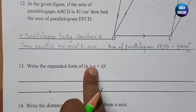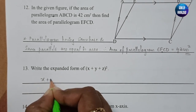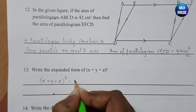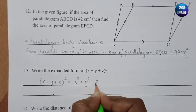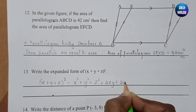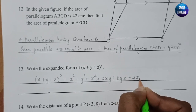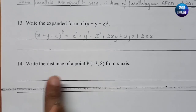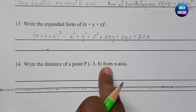Write the expanded form of (x + y + z)². The identity gives: x² + y² + z² + 2xy + 2yz + 2zx.